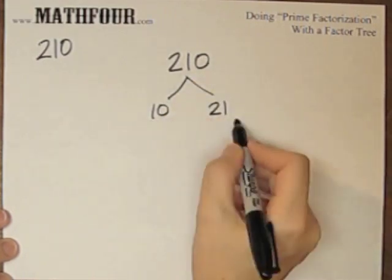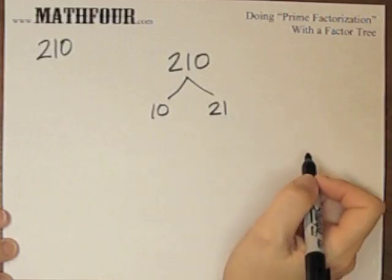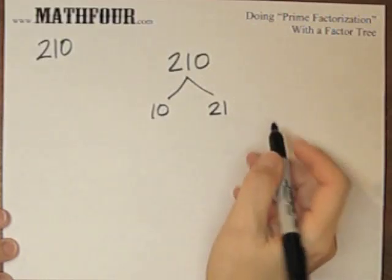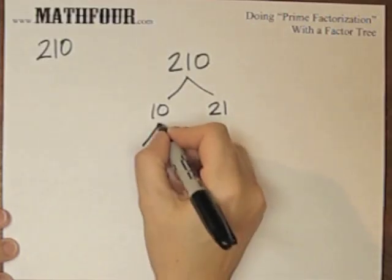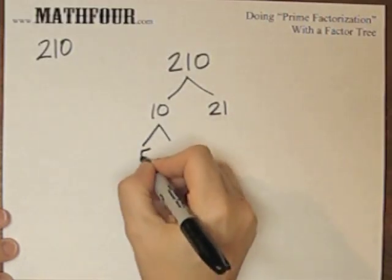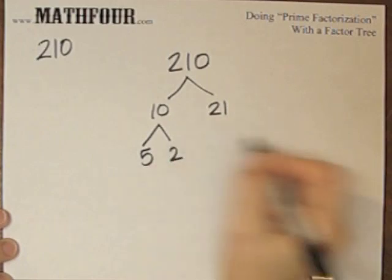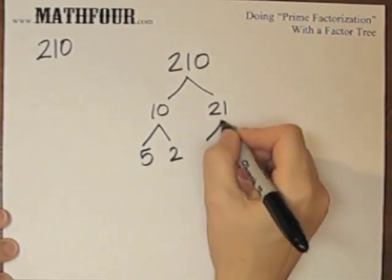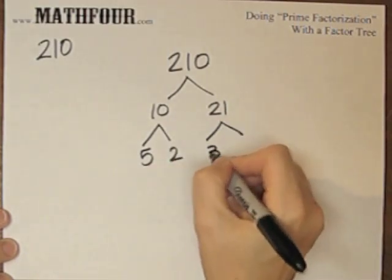Well, are either one of those primes? No. So 10 is 5 times 2, and 21 is 3 times 7.